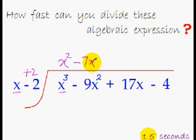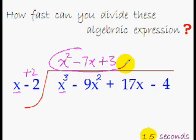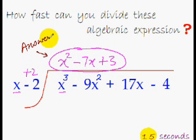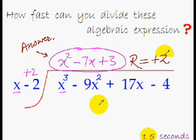Plus 2 times -7x is -14x. -14x + 17x is +3x. So I'll put +3, and this is my final answer. In case you want to know the remainder, I can even tell you that. +2 times +3 is +6. +6 - 4 is +2. So the remainder is +2.